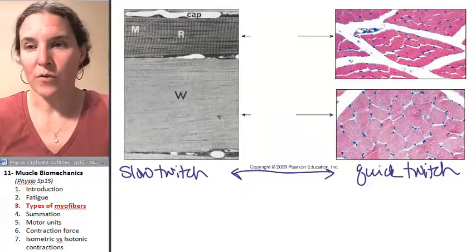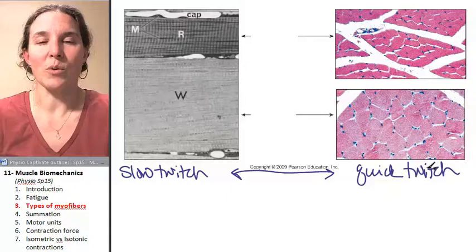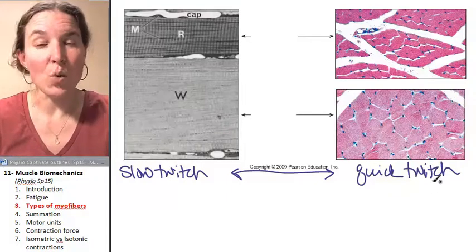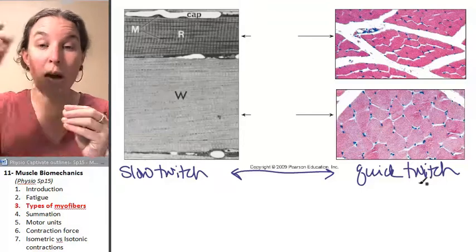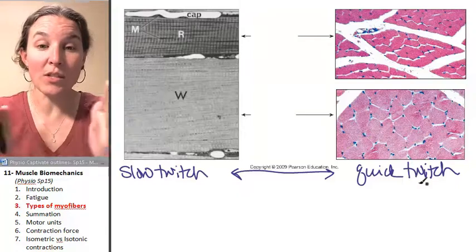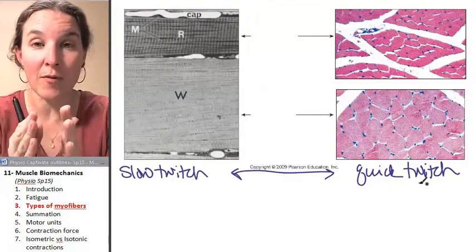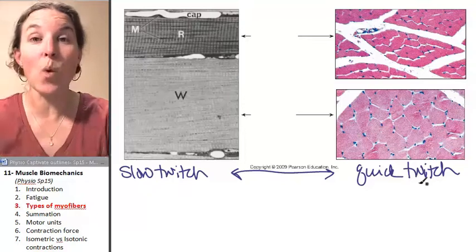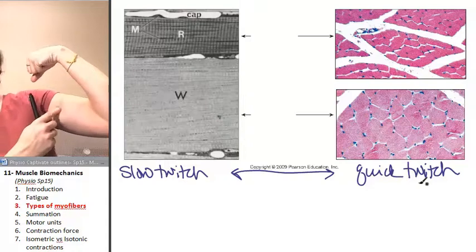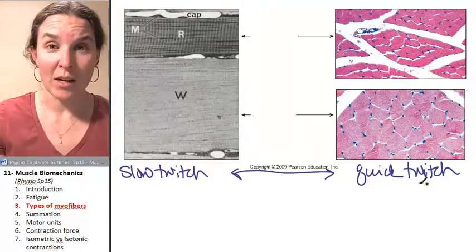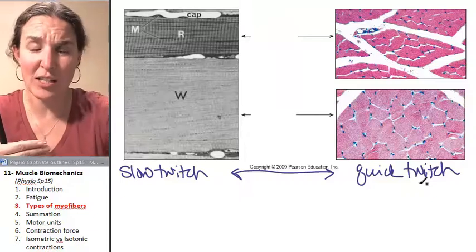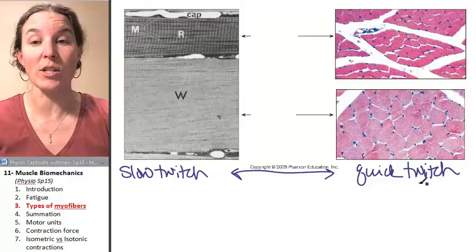We'll start with the quick twitch fibers. First of all, they're called quick twitch, and hopefully, I don't know if I said this or not, but a twitch is one action potential from a somatic motor neuron and the resulting shortening of the myofiber that occurs. That's one twitch.